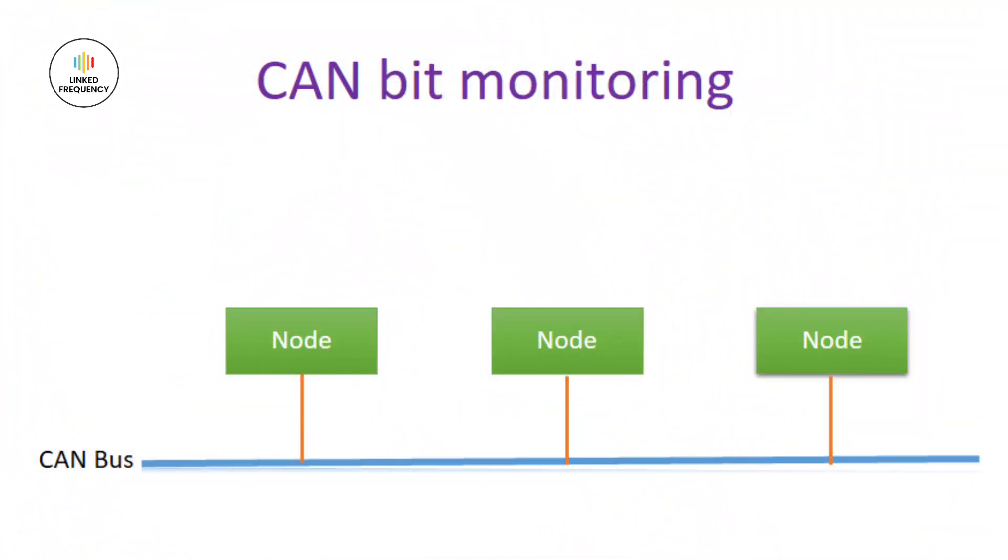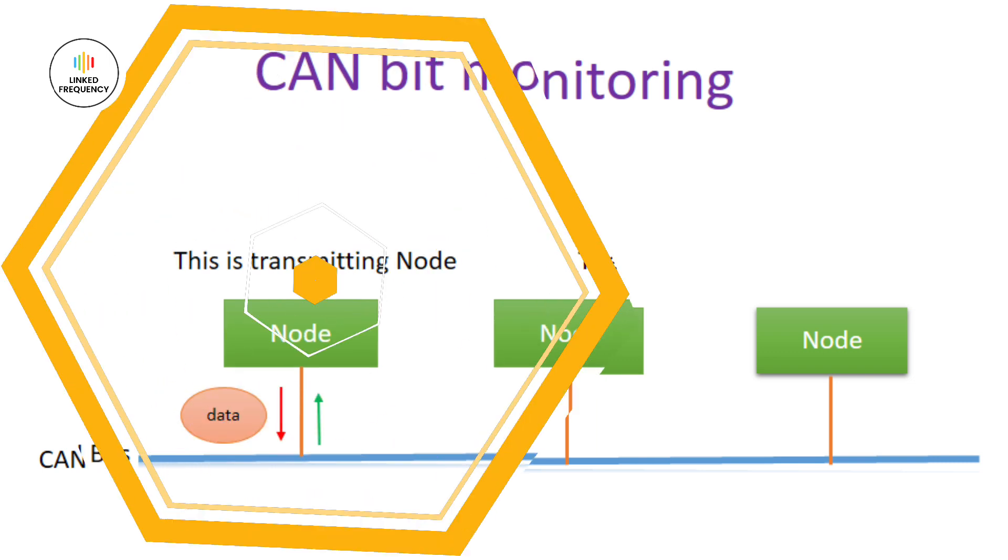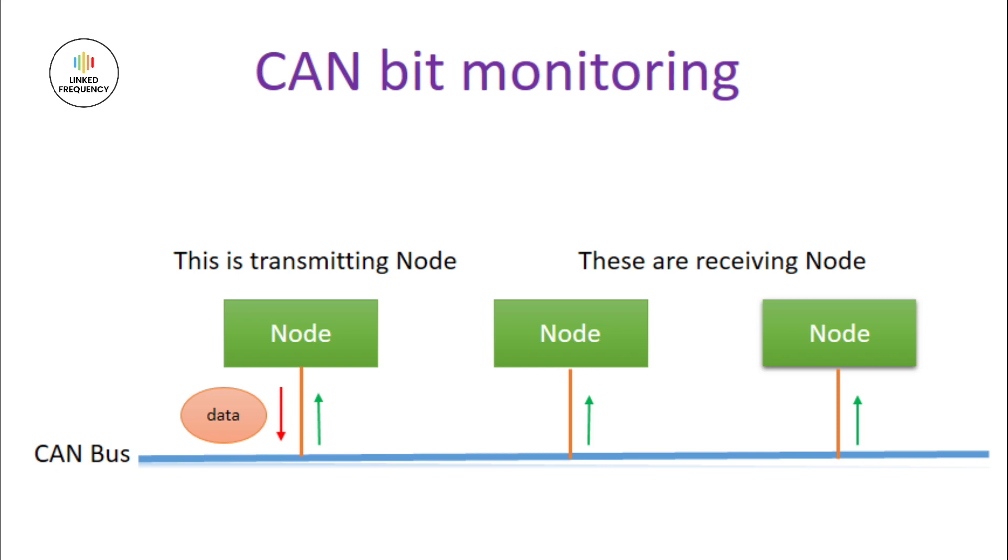Let's consider there are multiple nodes connected to the CAN bus. These nodes may be either transmitters or receivers. The transmitting node sends out data, and the remaining nodes act as receiving nodes. The transmitting node reads back its data from the CAN bus to ensure data integrity.